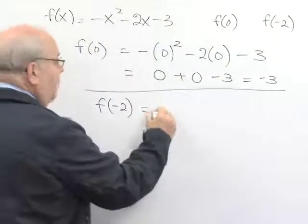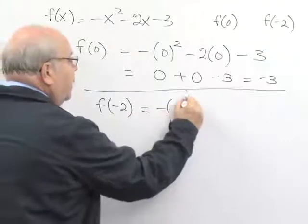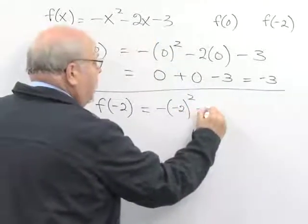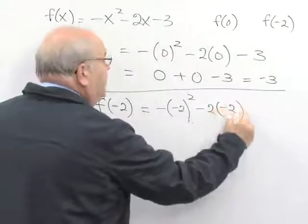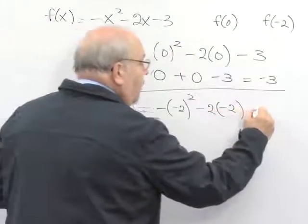So, x minus x squared would be minus minus 2 squared, minus 2 times x would be minus 2 times minus 2, and we have the quantity minus 3.